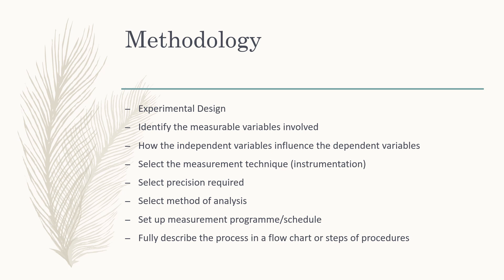You have to put the experimental design and identify the measurement variables involved. Identify parameters and how the independent variable influences the dependent variables. Select the measurement techniques and instrumentation you are going to use. Choose which software to use — for example, Excel or MATLAB. Select the precision required, select the method of analysis — whether you use tables or graphs — set up the measurement program or schedule, and fully describe the process in a flowchart or steps of procedure.